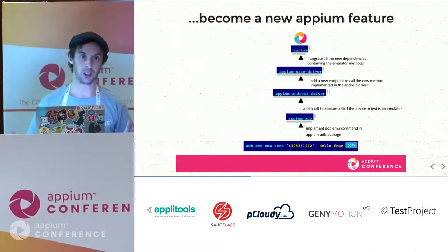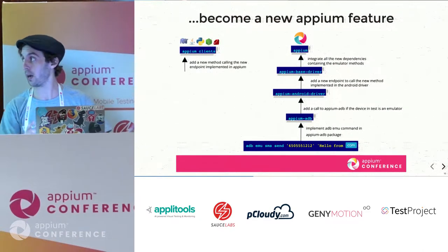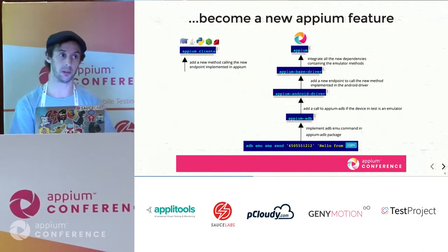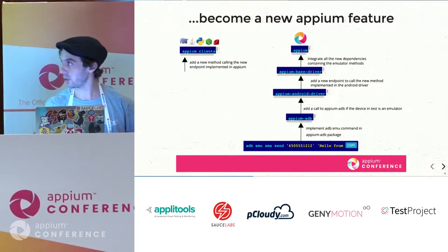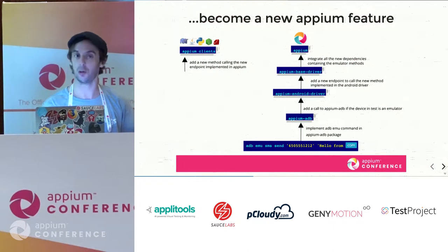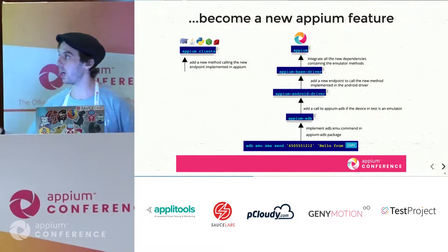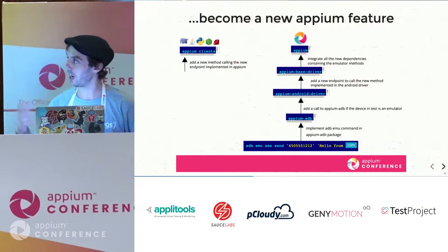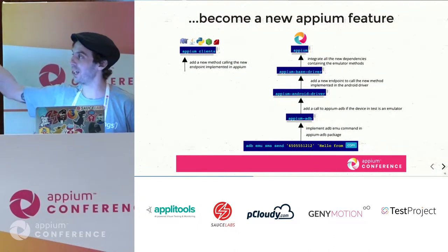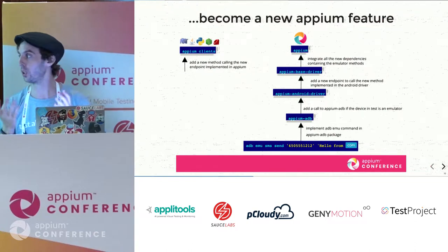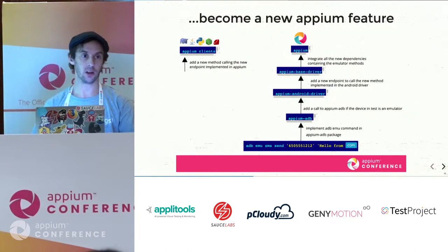But there's one more thing: you also need to update all the clients. We've updated the server with a new endpoint and new parameters for sendSMS, but then we need to update the client libraries. Whether you're programming in Java, Python, Node.js, PHP, or others — once the server is updated, you go update the client so you can use that feature in your tests.